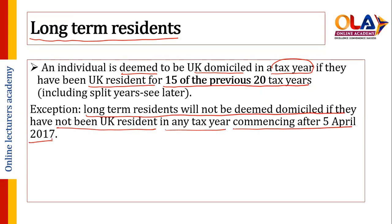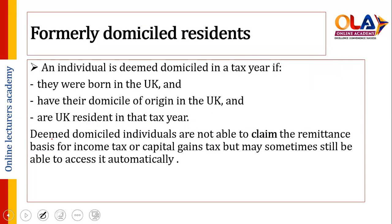This means the person must be a UK resident in tax years 2017/18, 2018/19, or 2019/20 in order for the long-term resident rule to apply. So we first check the 15 years out of the last 20, and then check whether resident status is active in those post-April 2017 tax years.